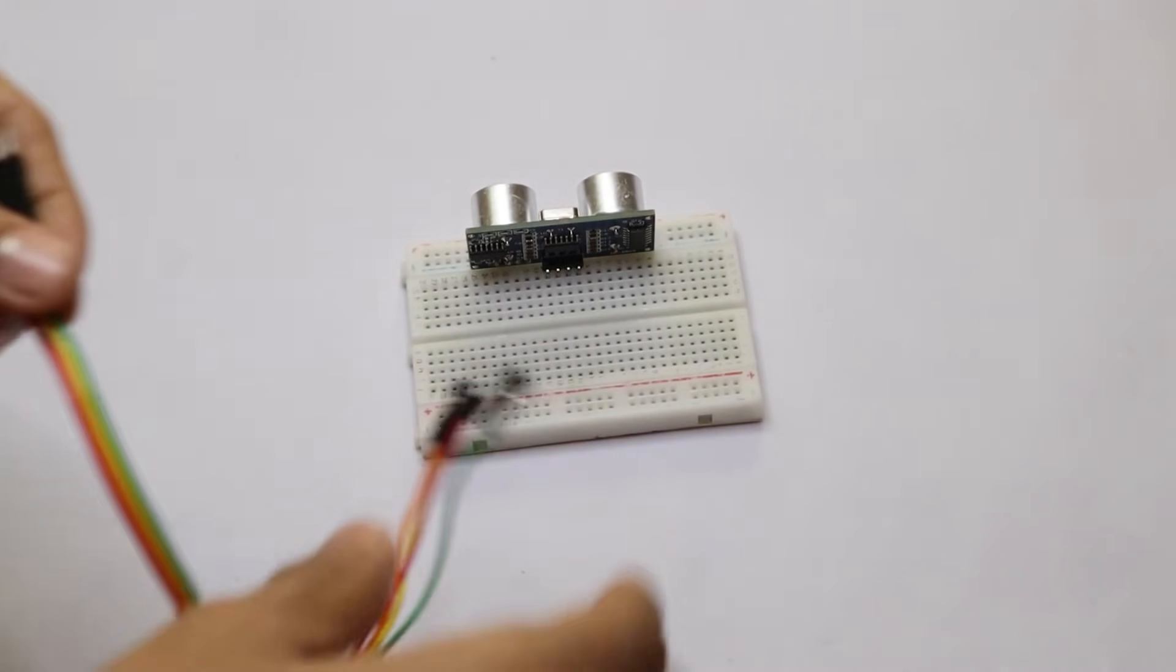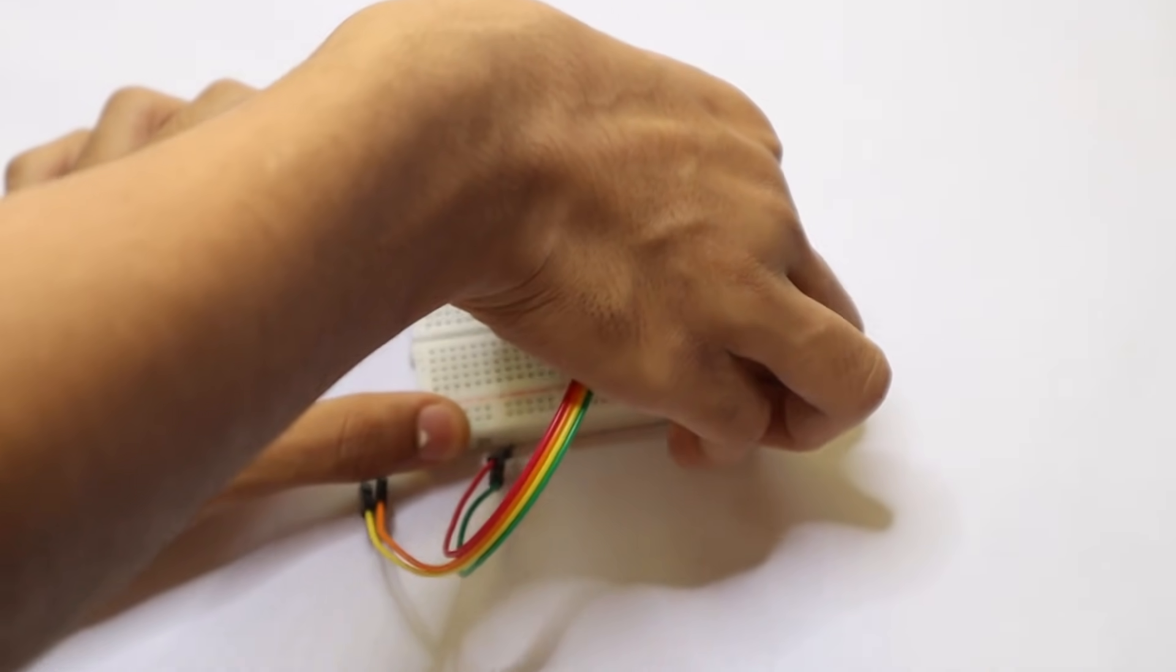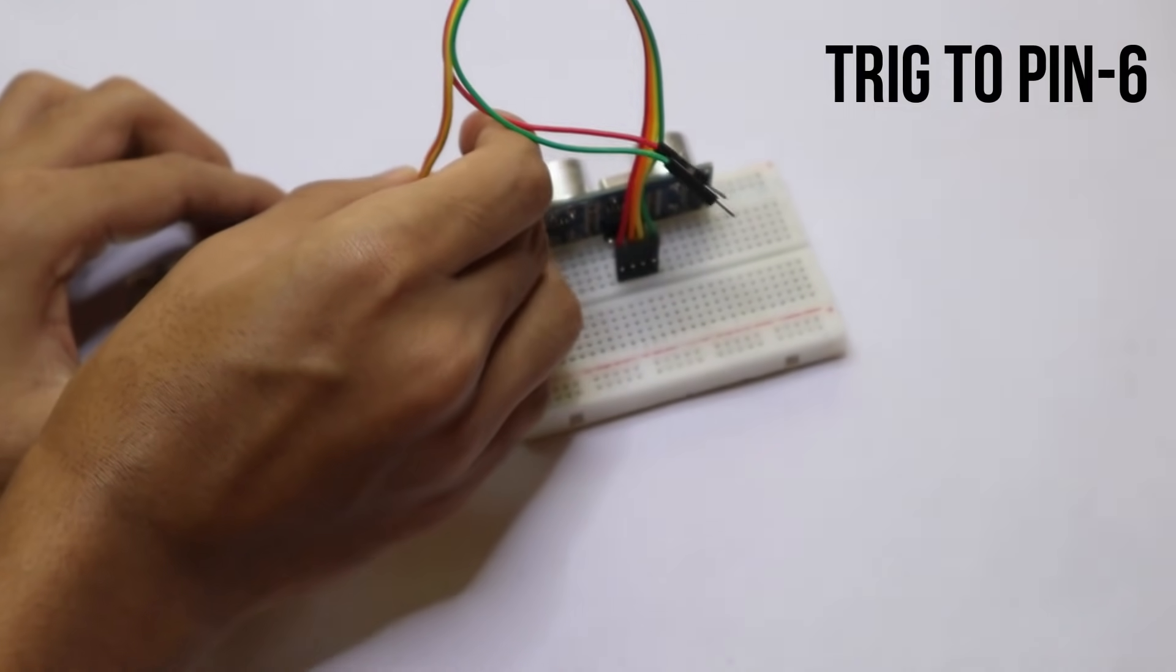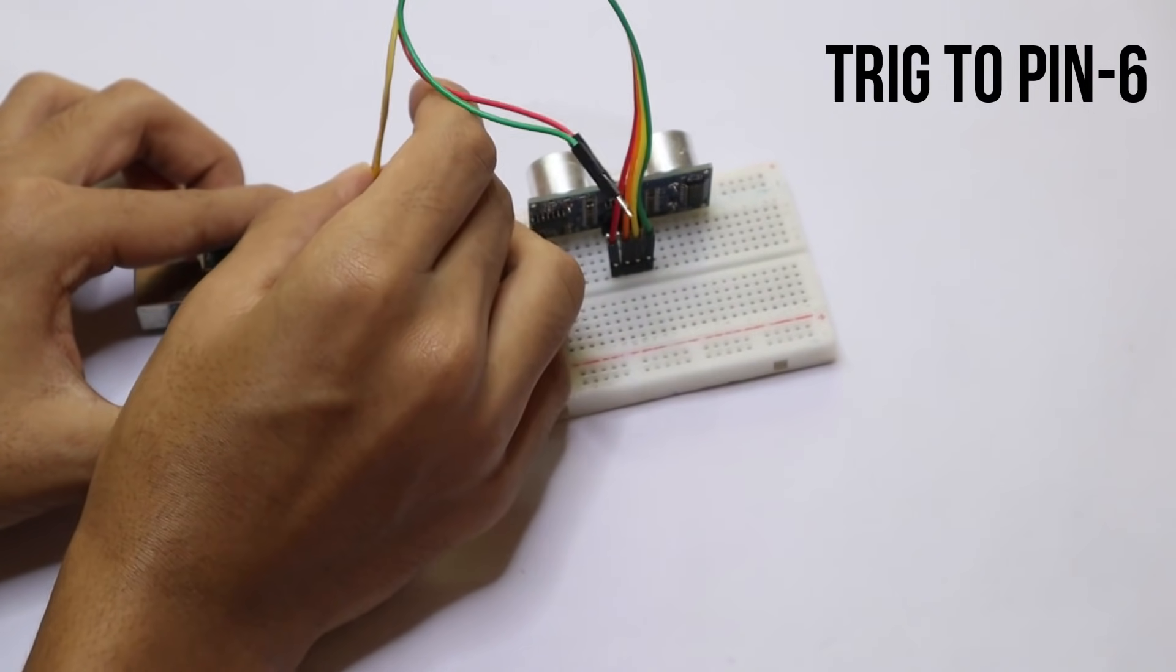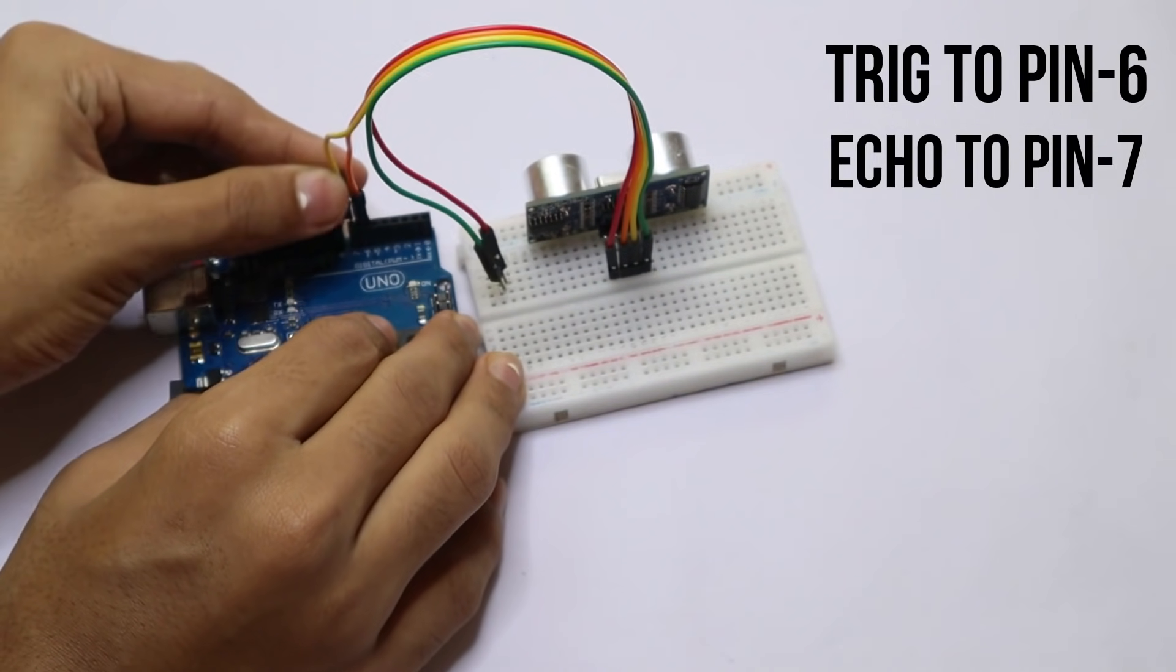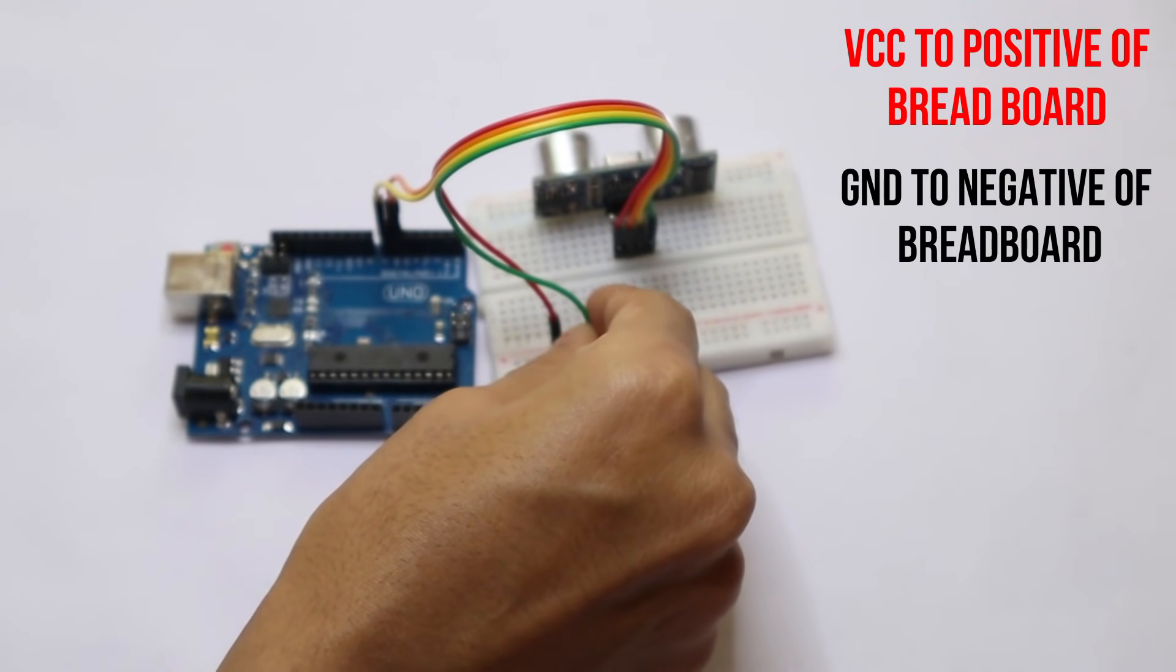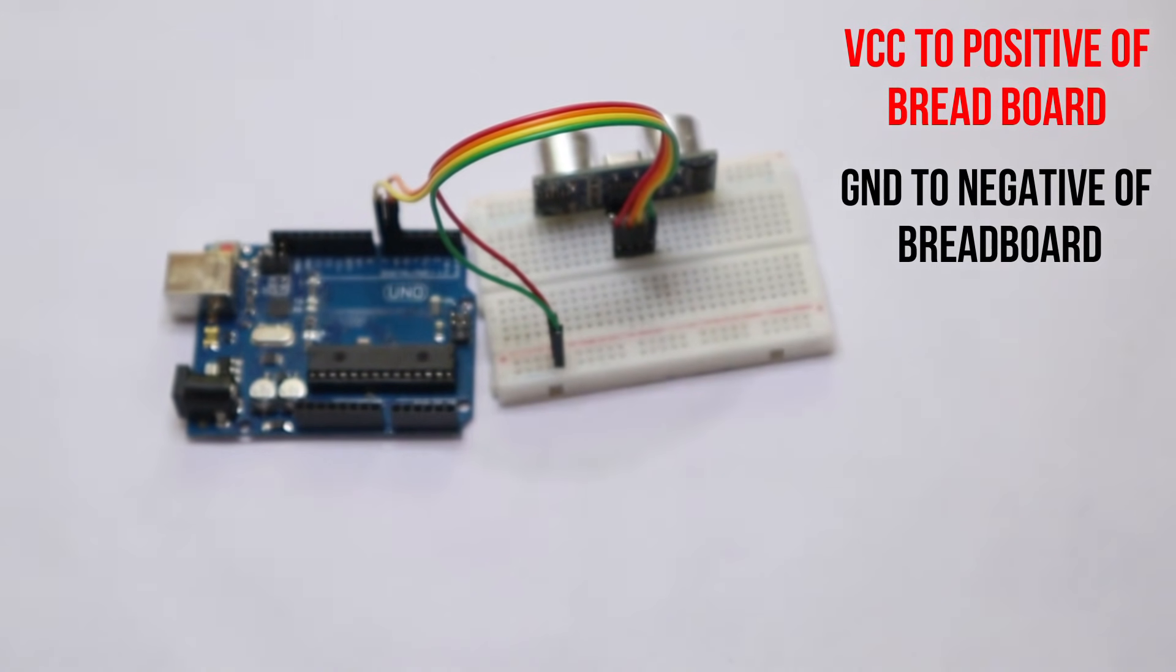Now take the four wires of the ultrasonic sensor and connect it to the breadboard. Now connect the trigger pin to pin 6 and echo pin to pin 7. Now the VCC to positive and ground to negative.